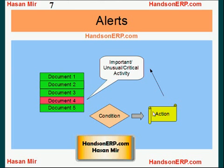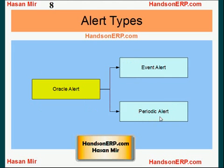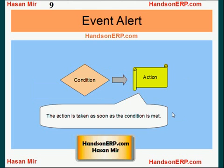You define conditions and actions in the Oracle Alerts module. Oracle Alerts are of two types: Event Alert and Periodic Alert. In an Event Alert, action is taken as soon as the condition is met.